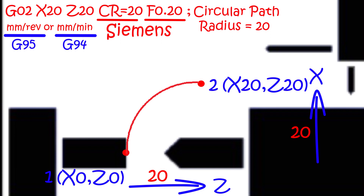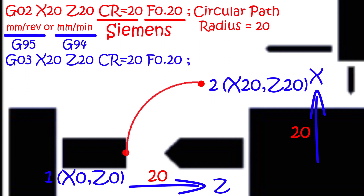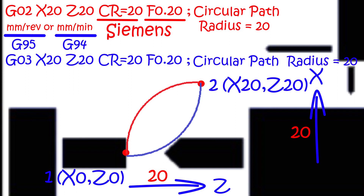According to the fourth method, we will program a block: G03, X20, Z20, CR equals to 20, F0.20, semicolon. With this block, the controller will give a command to move the tool in a circular path to coordinate position 20,20 with radius 20 in counterclockwise direction, with the feed defined by the programmer in the same block. This block also represents Siemens controller programming as we are using CR for the radius. Feed units can be mm per revolution or mm per minute — G95 for mm per revolution and G94 for mm per minute in the case of Siemens controller.